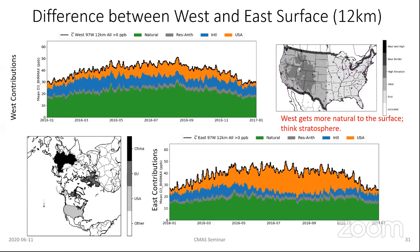Now going back to the surface looking at things seasonally, using the 12-kilometer resolved model results at the surface of the U.S., breaking things up by West and East. The natural contributions are peaking in the summer. There's probably some natural contributions we're not getting in the spring due to stratosphere underestimation. The international contributions are peaking in March to May and decreasing as we move into the traditional ozone season. In the East, international is smaller in general and decreases more clearly in the summer, and the natural component has a double-peak feature in late April and early October.